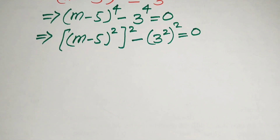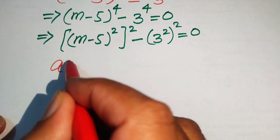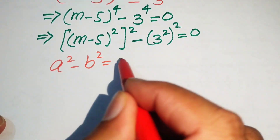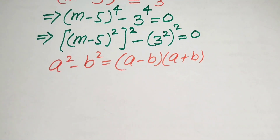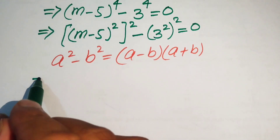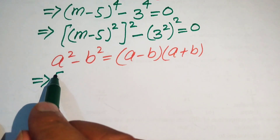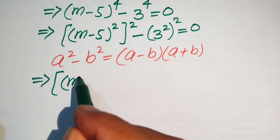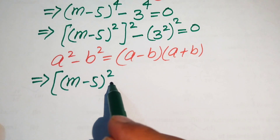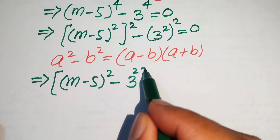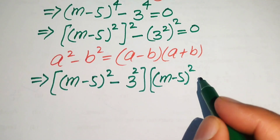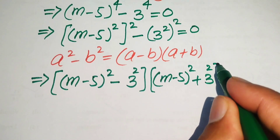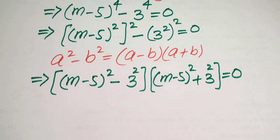In the next step we apply the difference of squares identity: a² minus b² equals (a minus b)(a plus b). Here a is (m minus 5)² and b is 3², so the equation becomes [(m minus 5)² minus 3²] times [(m minus 5)² plus 3²] equals 0.